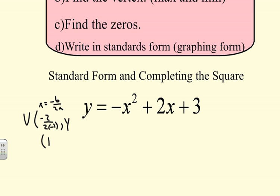Once we have x equals 1, we find the y value by plugging 1 back into the equation: negative 1 plus 2 times 1 plus 3 gives us negative 1 plus 2 plus 3, which equals 4. So the vertex is (1, 4).